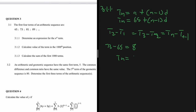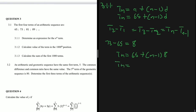So tn = 65 + (n-1) × 8. Expanding: tn = 65 + 8n - 8, which simplifies to tn = 8n + 57. That is our general formula for the nth term.